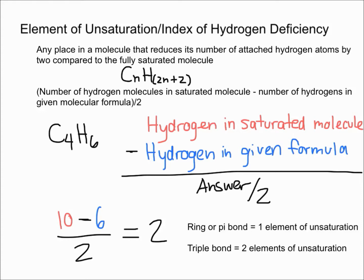Now what do you do with that number? We have two elements of unsaturation, so there are many possibilities. If you have a ring or a pi bond in the molecule, that equals one element of unsaturation.